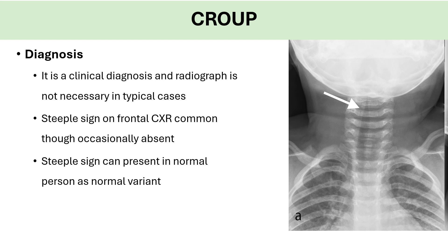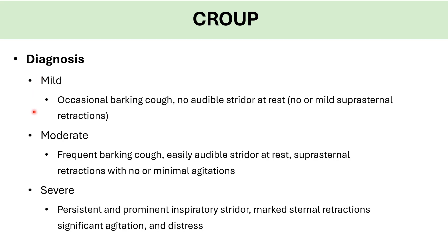A steeple sign may be seen in cases of croup on chest X-ray, but can also be absent in croup or seen as a normal variant in a person without croup. Classification of croup is critical to know.